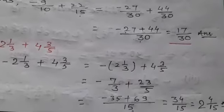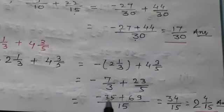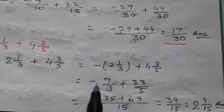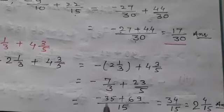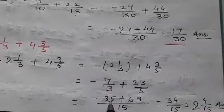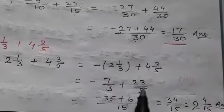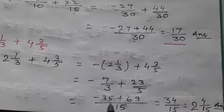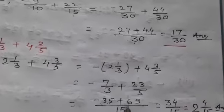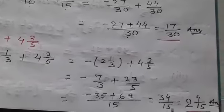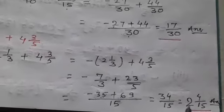The LCM of 3 and 5 is 15. So −7 × 5 = −35, and 23 × 3 = 69. When we solve it, we find (−35 + 69)/15 = 34/15, which equals 2 and 4/15.